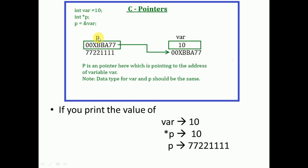This pointer p holds the address of var, and p itself also has its own memory address. When p is holding the address of var, we say p is pointing to the variable var. This means it is also possible to access or change the value of var through the pointer variable p. Here, p is a pointer pointing to the address of var, and importantly, the data type of var and p must be the same.